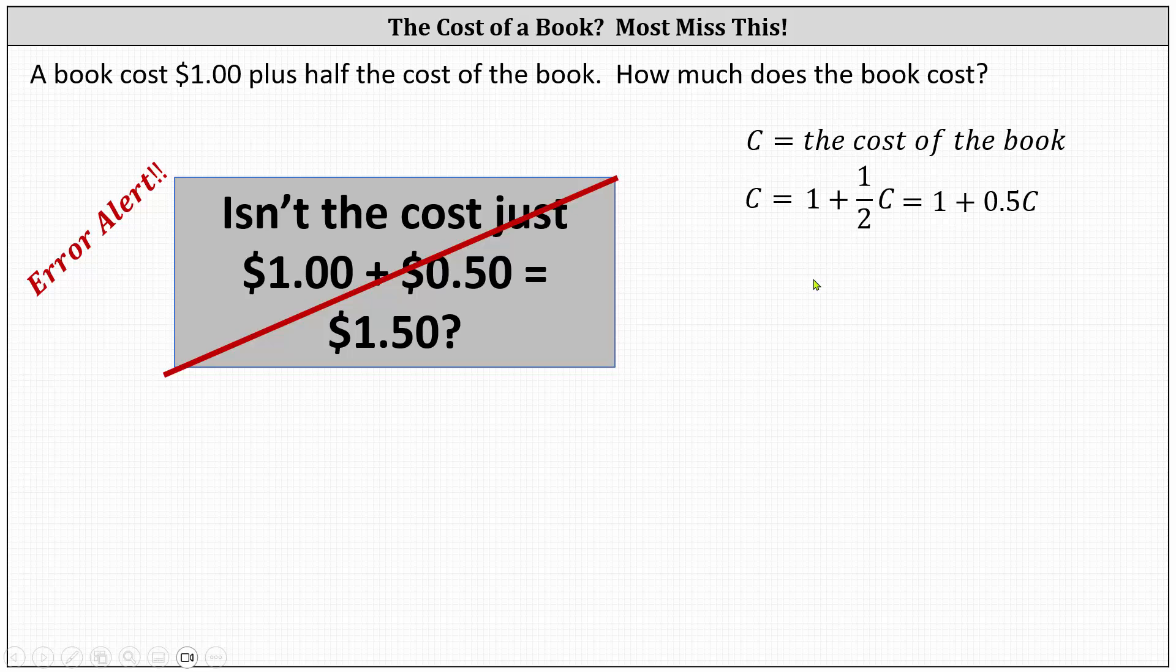Let's go ahead and solve the equation in this form. We need to get C on the same side of the equation. Let's subtract 0.5 C on both sides. Simplifying, we have 0.5 C equals 1. And now to solve for C, we divide both sides by 0.5.